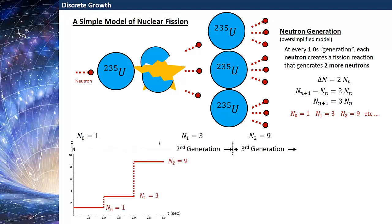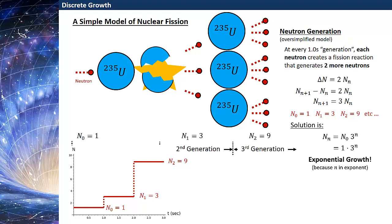If I were to plot this as a function of time — the number of neutrons versus time in seconds for each generation — then you see this stepwise production of neutrons starting at 1, then 3, then 9, and continually growing after that. The solution to the number of neutrons at any given generation is actually pretty straightforward: the solution is N₀ times 3 to the n for the number of neutrons on the nth generation. Or starting with one neutron, as in our example, it'll be 1 times 3 to the n.